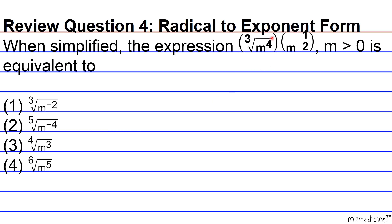In order to multiply these two monomial expressions, we are going to convert this radical expression into exponent form, like its counterpart. The rule is that any base raised to a fractional exponent a over b is equivalent to the b-th root of that base, where the base is raised to the a exponent within the radicand.